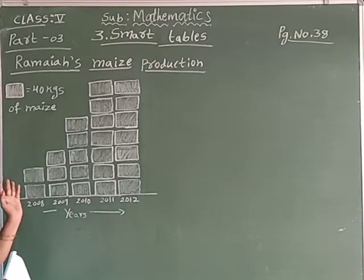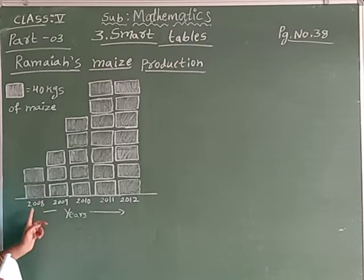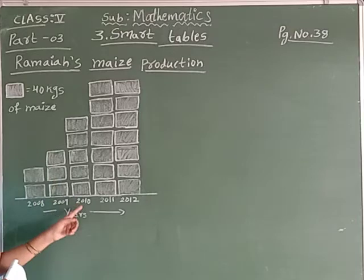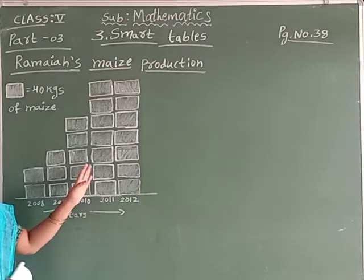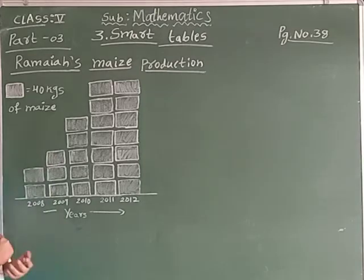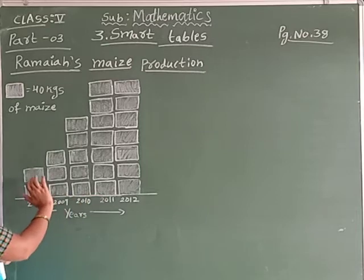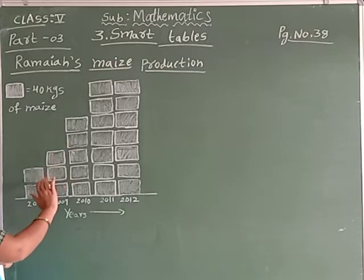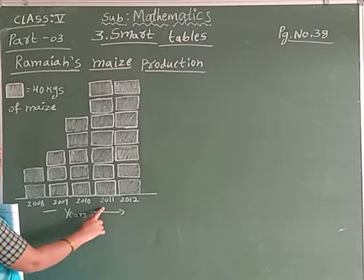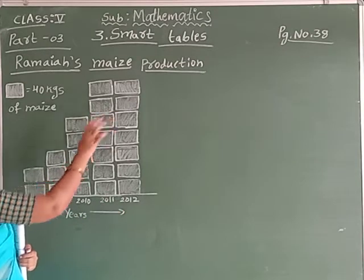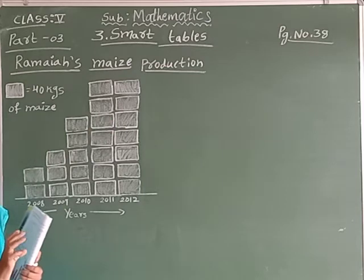See here — we are giving boxes. In 2008, some years have more boxes and some years have less boxes. In Ramayana's maize production, you observe this picture year to year. From 2008 to 2009, the production is increasing. But in 2011 and 2012, the same production only was in his field.